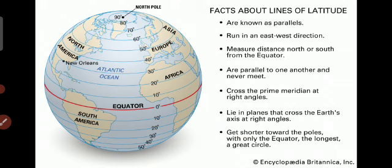Going south from the equator: 10°, 20°, 30°, 40°, 50°, up to 90°. The north pole is 90° north and the south pole is 90° south. The lines are parallel to one another and never meet. They cross the prime meridian at right angles, like planes that cross the earth's axis at right angles.